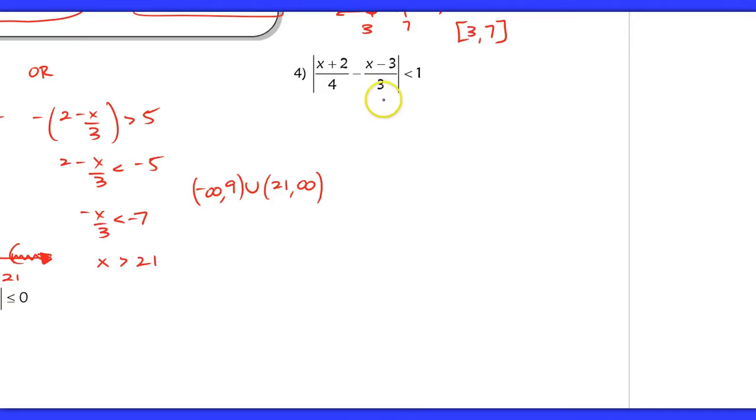Okay, in problem number 4, I'm going to start by setting up my two cases. x plus 2 over 4 minus x minus 3 over 3 is less than 1. So if it's positive, I do nothing. I just set it up normally. If it's negative, then I take the opposite of x plus 2 over 4 minus x minus 3 over 3 is less than 1. And I'm going to solve each one.